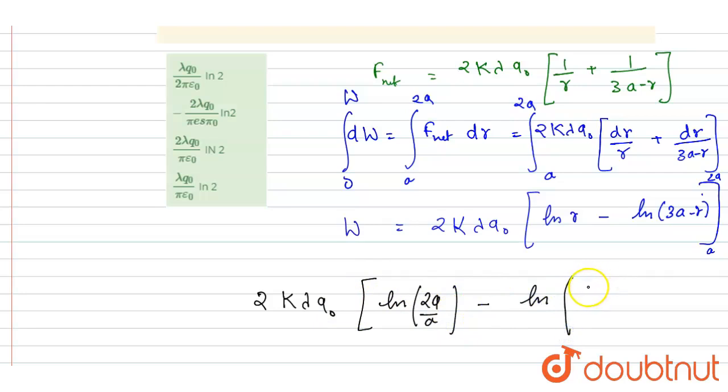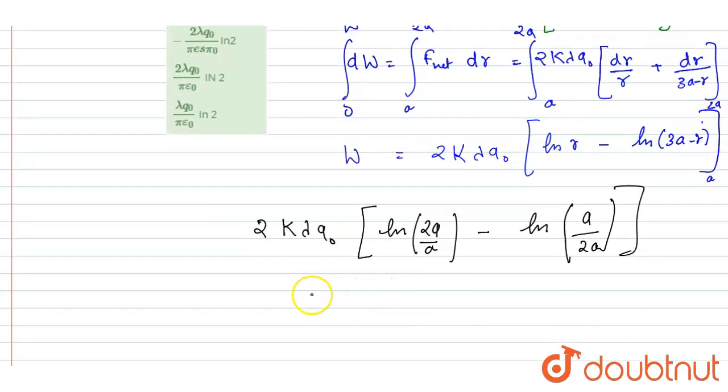And this will be, so 3A minus 2A is A. 3A minus A is 2A. So basically, both are ln 2 and ln 2. You will get 2ln 2.